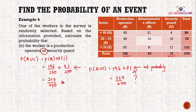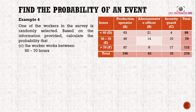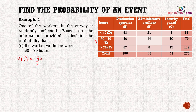Calculate the probability that the worker works between 50 to 70 hours. Looking at the table, the total for that row is 70, so P(E) = 70/270, which simplifies to 7/27.